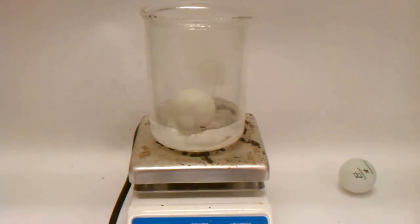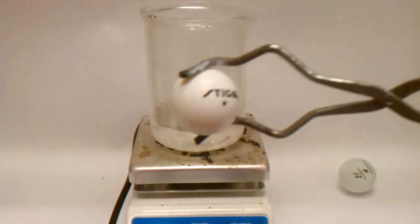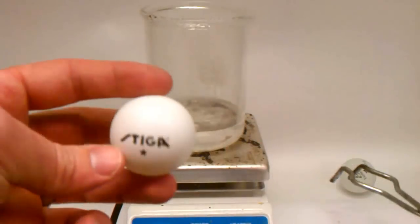To raise the temperature of the gas inside the ping pong ball, simply throw it into some boiling water. As the air inside the ball heats up, it expands and pushes against the sides of the ball. As the gas expands, the dent is pushed outwards, the ping pong ball returns to its original shape, and you can continue your game.